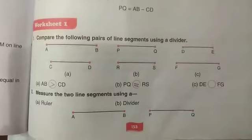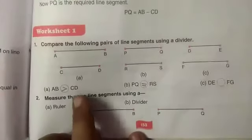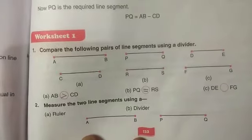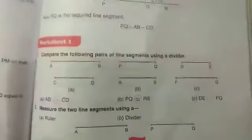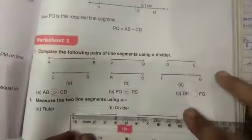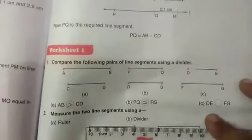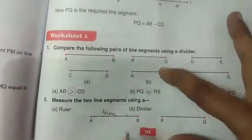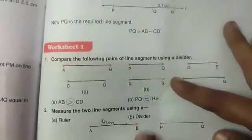Now question number two: measure the two line segments using a ruler and divider. You all know how to measure the line segments now, so you will measure this segment in this way. The first segment is of measure four centimeters. Just measure the length and write here. You can check this answer with divider also.